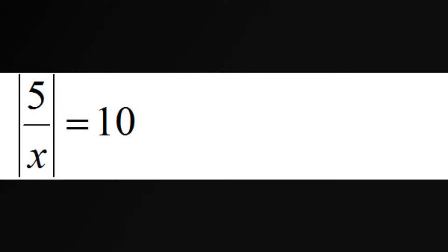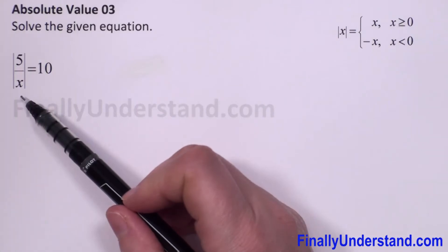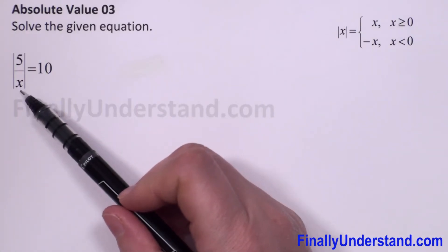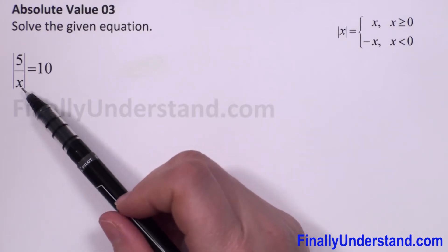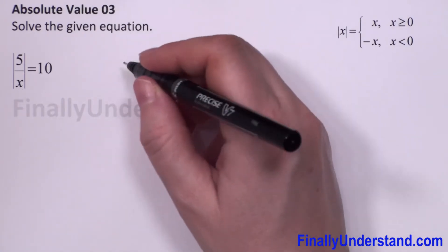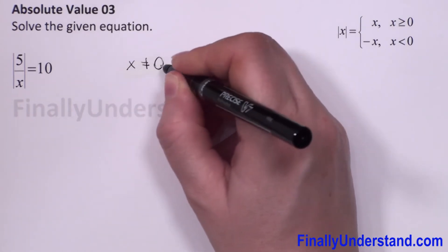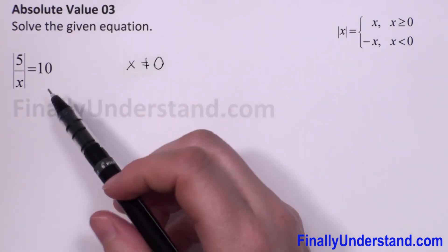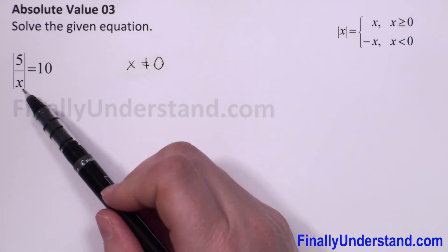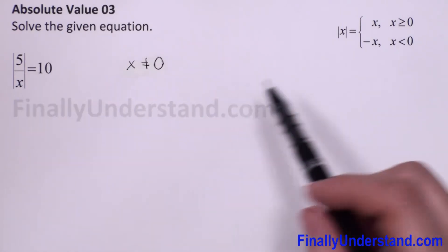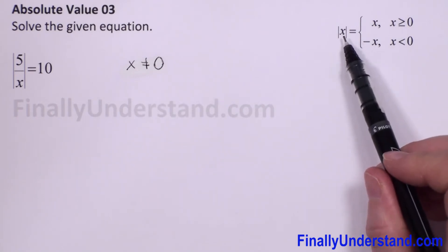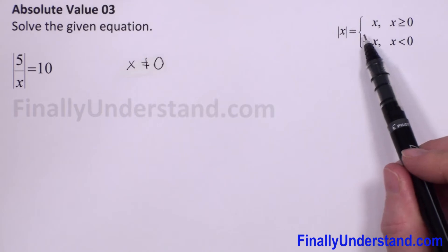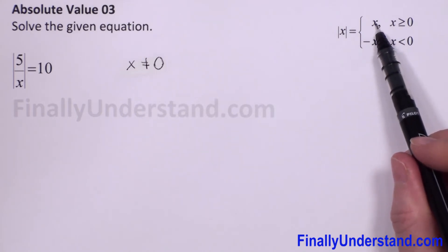We have another example — an equation with absolute value, but note that we have x in the denominator. This means we first have to assume that x must be different than 0. Because we have absolute value, we will use the definition of absolute value to solve this equation. We see that the absolute value bars split into two cases.